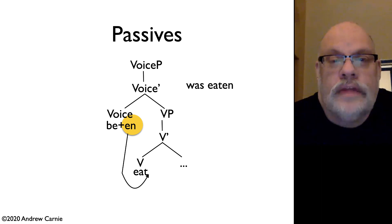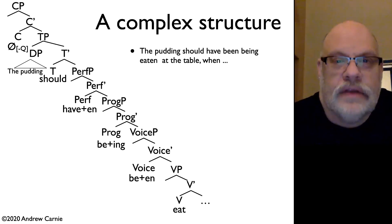Now recall that you can combine all these forms together. So you can have a complex structure that has tense, it has perfect, it has progressive, it has passive voice, and it has a main verb. So here's the sentence we're going to draw the diagram of: The pudding should have been being eaten at the table when Bill walked in. We're not going to leave off the when bit, but this is a little complicated structure.